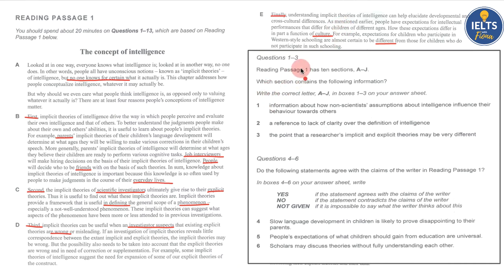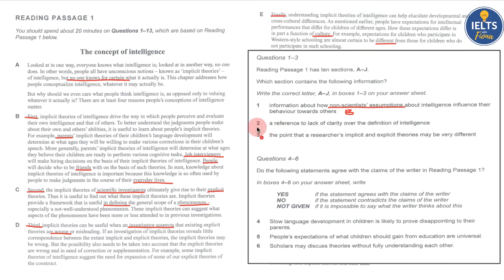Looking at the matching information questions — the first says 'information about how non-scientists' assumptions about intelligence influence their behaviour towards others.' The main thing here is 'non-scientists' assumptions,' and that comes in paragraph B, where we talked about parents, friends, and job interviewers — they are the non-scientists. In question two, it says 'a reference to a lack of clarity over the definition.' Whenever you see the word 'definition,' it usually means there are quote marks. It says 'no one knows for certain what it actually is,' so that very simply gives us A.